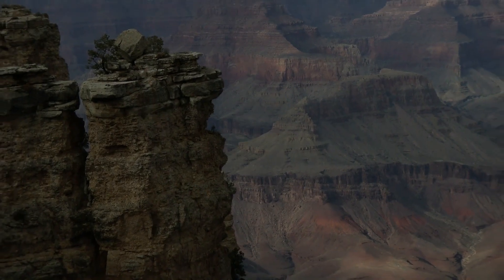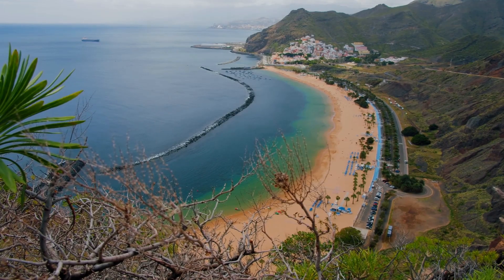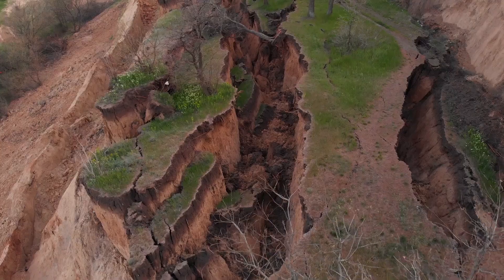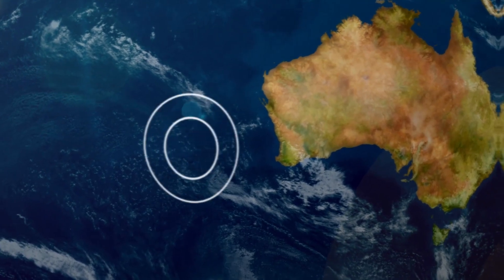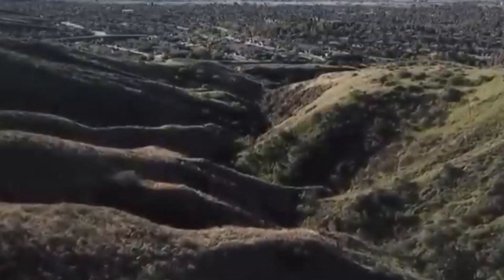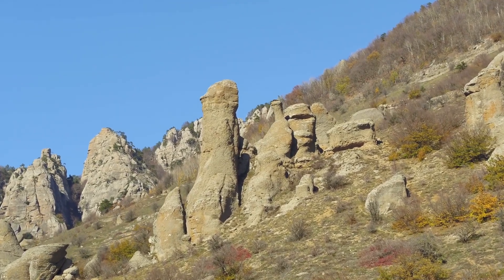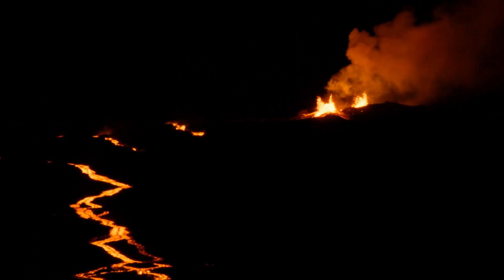The San Andreas Fault is actually a complicated network of interconnecting faults rather than a single, continuous fault line. It is composed of many parts, each of which has the potential to cause large-scale earthquakes. The two most well-known sections are the Northern Section, which stretches to the San Francisco Bay area in the northwest, and the Southern section, which passes through the densely populated areas of Southern California. California is home to several more significant faults outside the San Andreas Fault, such as the Haywood, San Jacinto, and Calaveras Faults, which present extra seismic threats.